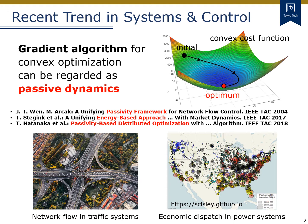After the 2000s, a close link has been found between gradient algorithms for convex optimization and passivity of dynamical systems. This is an illustration of gradient algorithms of convex optimization. Here, the minimum value of a convex cost function is found by a gradient descent method. In fact, this update of the optimization variable from an initial value to an optimal value can be regarded as a dynamical system. From such a viewpoint, a lot of papers discuss optimization algorithm design based on the tools from systems and control, especially based on passivity.